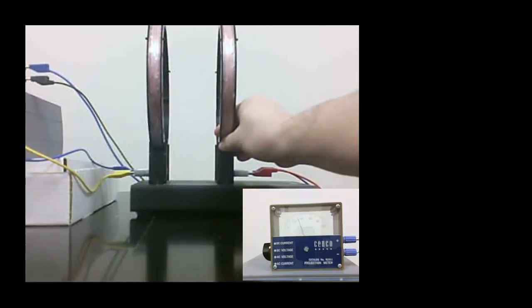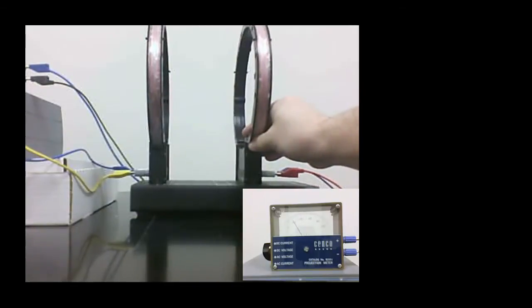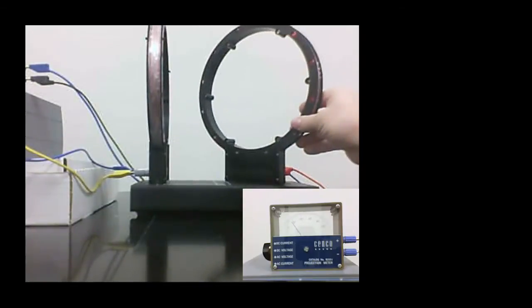Moving the coil back and forth changes the amount of flux, the magnetic flux, going through the secondary coil, and therefore the mutual inductance.